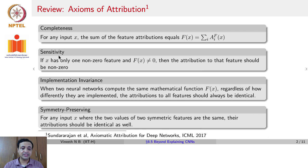Another axiom sensitivity states, if x has only one non-zero feature, and F(x), the output of the neural network is not zero, then the attribution to that feature should be non-zero. And you would actually find that gradient based methods do not satisfy this sensitivity axiom. Think about it and try to answer why. You can also read this paper for the answer. When I say integrated gradient actually satisfies, vanilla gradient based methods do not satisfy the sensitivity axiom.